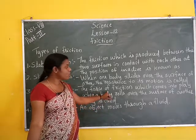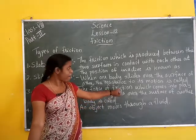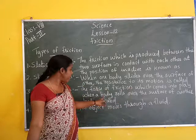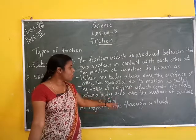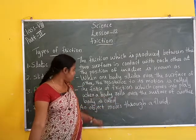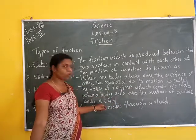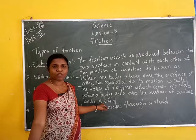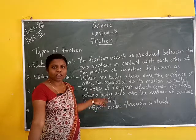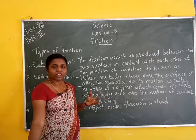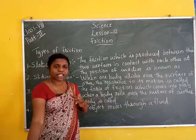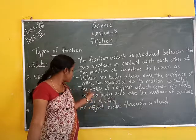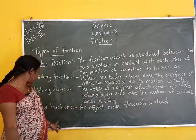The force of friction which comes into play when a body rolls over the surface of another body is called rolling friction. Examples include chairs, trolleys, and wheels — these represent rolling friction.